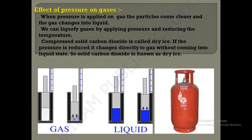Inside the LPG cylinder, only liquid is present — the gases are compressed so the molecules come closer together, converting to liquid. When the stove is turned on, the liquid comes in contact with the atmosphere and is converted back into gaseous state, which catches fire. Compressed solid carbon dioxide is called dry ice. If the pressure is reduced, it changes directly to gas without becoming liquid.